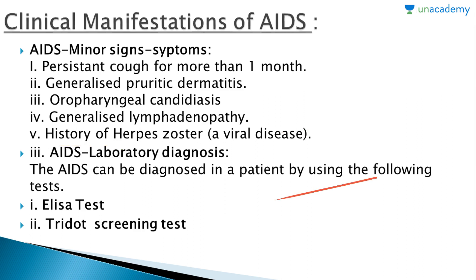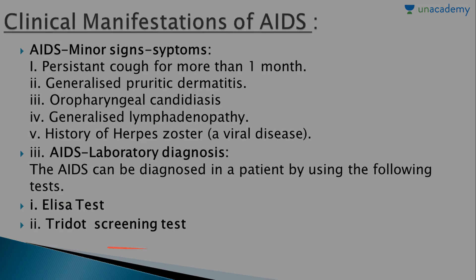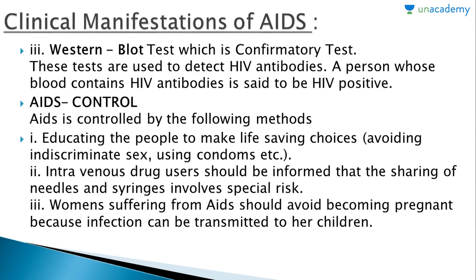For laboratory diagnosis, AIDS can be diagnosed using the ELISA — Enzyme-Linked Immunosorbent Assay — test and the Tridot screening test. The confirmatory test is the Western Blot test. These tests are used to detect HIV antibodies. A person whose blood contains HIV antibodies is said to be HIV positive.